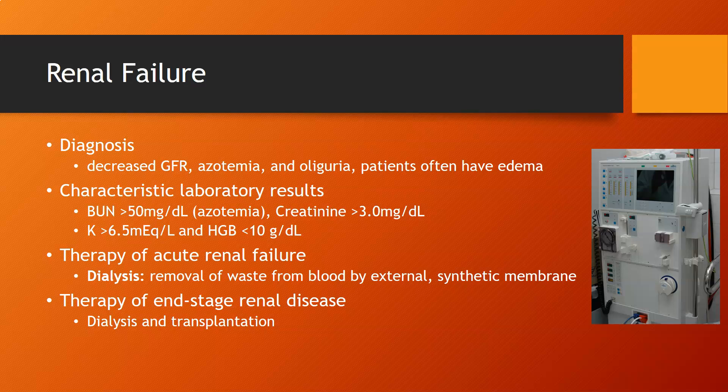Characteristic lab results in renal failure include a BUN above 50 mg/dL (azotemia), creatinine greater than 3.0 mg/dL (roughly three times normal), and in acute renal failure, potassium above 6.5 mEq/L (elevated, since the top of normal is around 5), and hemoglobin less than 10 g/dL. Therapy for acute renal failure is dialysis to remove waste from the blood via an external synthetic membrane. End-stage renal disease is treated with either dialysis or kidney transplantation.